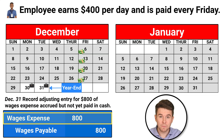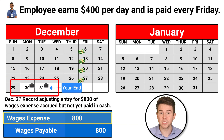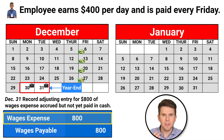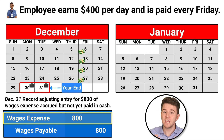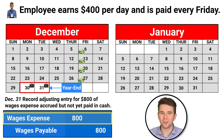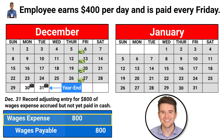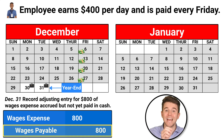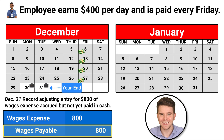We debit wages expense to record the expense of those two days worked by the employee. Even though that employee has not yet been paid in cash, the employee has earned those wages in the current period. We credit wages payable because the company owes that employee, but has not yet paid the employee in cash.